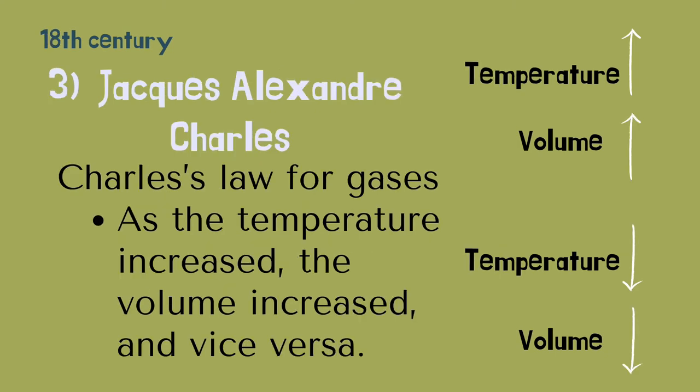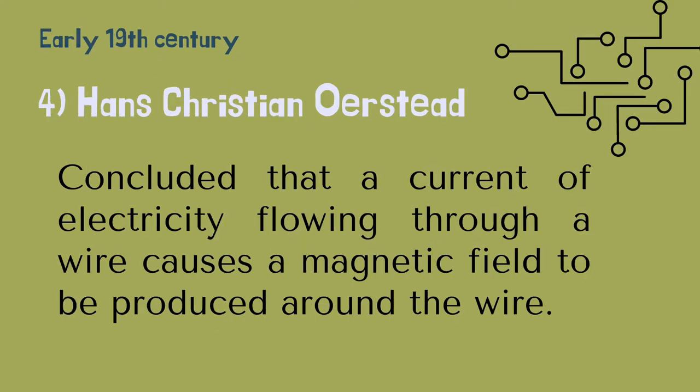In the 18th century, Jacques-Alexandre Charles observed a correlation between the temperature of a gas and its volume: as temperature increased, volume increased, and vice versa. In the early 19th century, Hans Christian Ørsted concluded that a current of electricity flowing through a wire causes a magnetic field to be produced around the wire. He noticed a wire carrying current could deflect a nearby compass needle — as the current increased, the deflection increased; as the current decreased, the deflection decreased; and if the current were reversed, the deflection would be reversed.